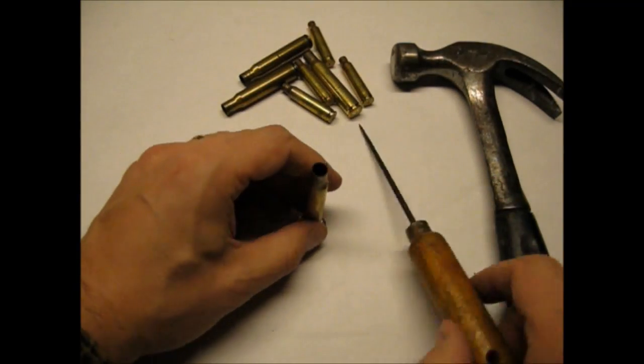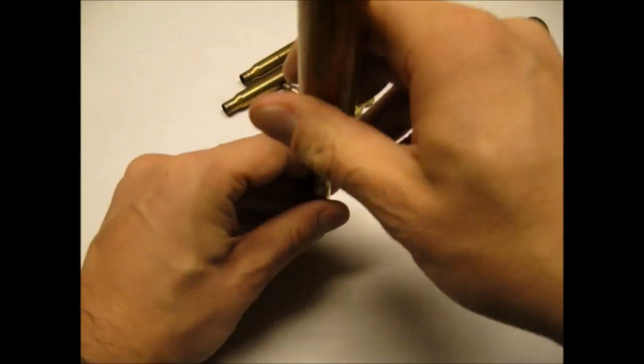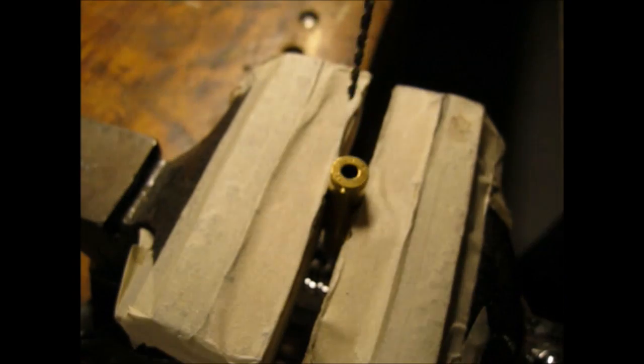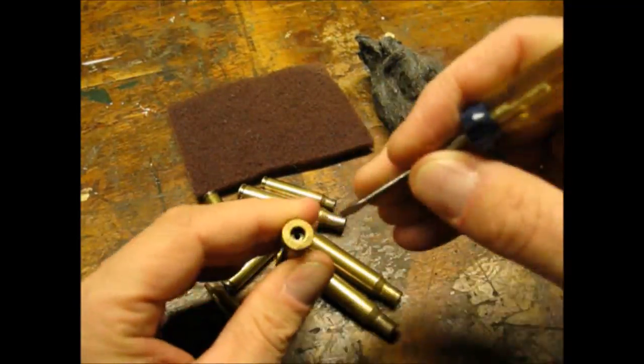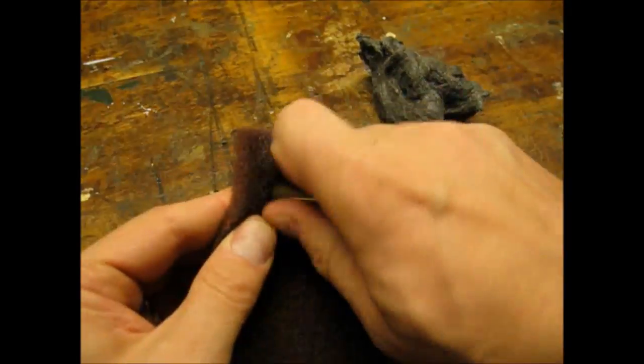So my first step with the shell cases was to remove the primers. Then I drilled out the primer holes so the chain would fit. I cleaned up the cases with Scotch-Brite and extra fine steel wool.